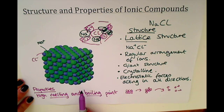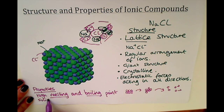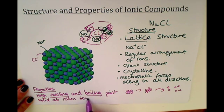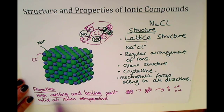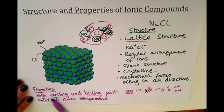Most ionic compounds are solid at room temperature. That goes hand in hand with the fact that they have a high melting and boiling point, because at room temperature it's not hot enough for the ionic compound to reach its melting point, so it will stay a solid. It won't be able to melt into a liquid and therefore won't reach its boiling point either.